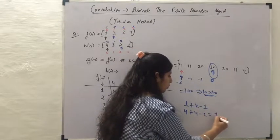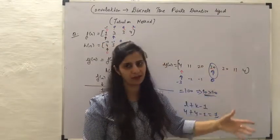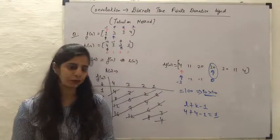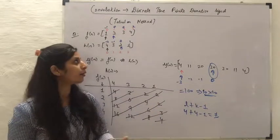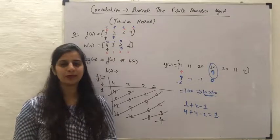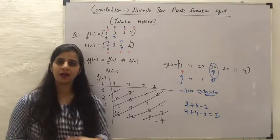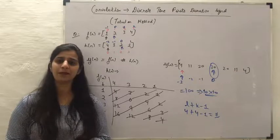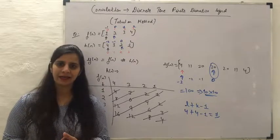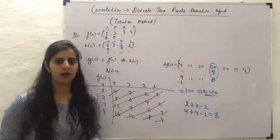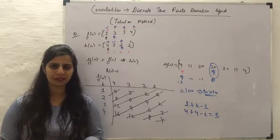The total number of samples in y of n is also given by L plus K minus 1, where L and K are the number of samples in f of n and h of n respectively. Here both have 4 samples, so 4 plus 4 minus 1 equals 7. Counting y of n confirms 7 samples. The restriction of this tabular method is that it can only be used for finite duration discrete time signals — it cannot be used for infinite duration signals. I hope this video is helpful. Thank you for watching.